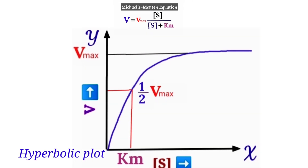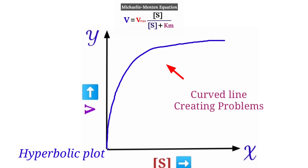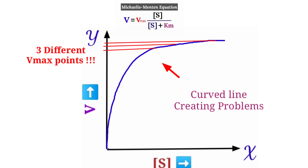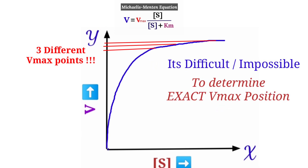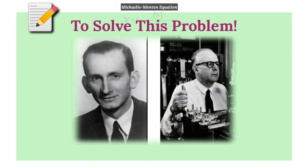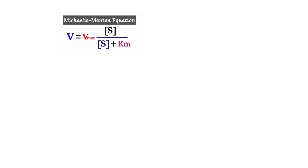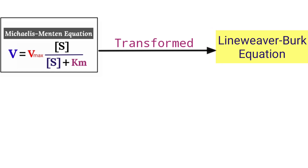If you look carefully at this hyperbolic plot, you will find the curve creates some problems. The curved line shows three different distinct Vmax points, so it is impossible to determine the exact Vmax value. To solve this critical problem, another pair of genius scientists came forward, known as Lineweaver and Burk, shown in these photographs.